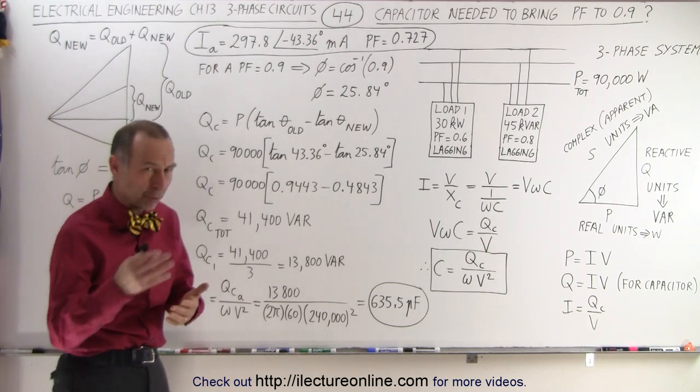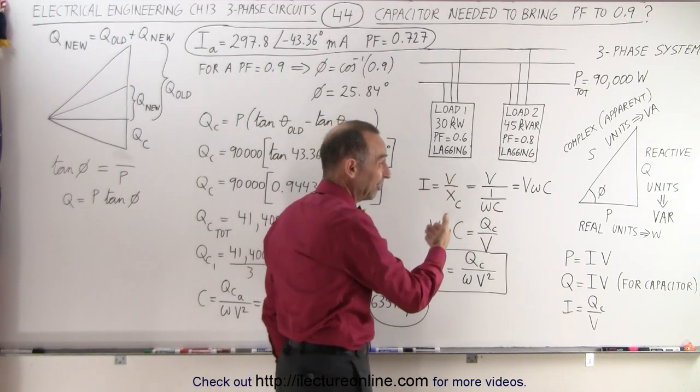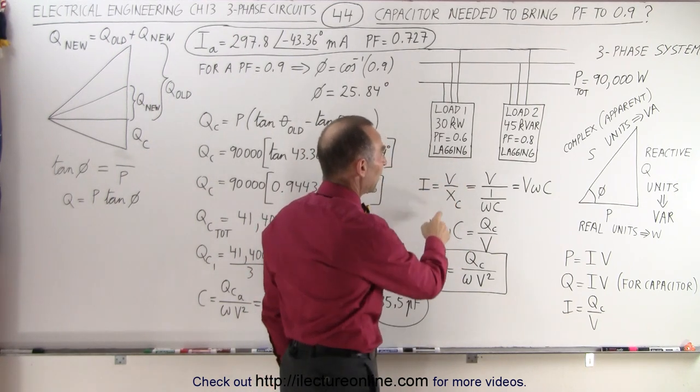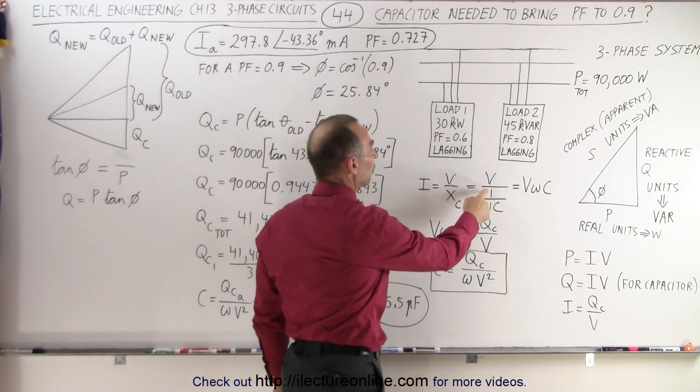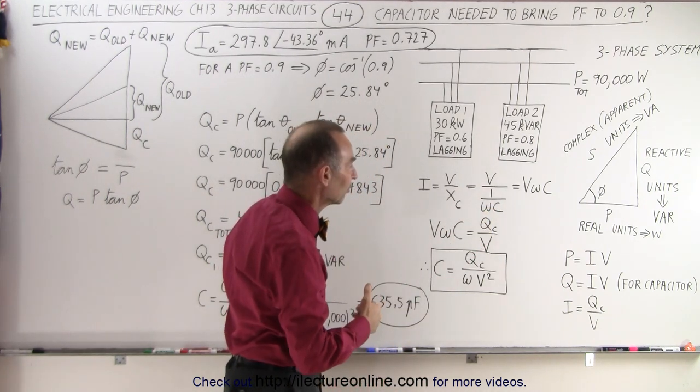So going back to some old equations, we need to remember that the current is equal to the voltage divided by the resistance, and in this case, it's the voltage divided by the reactance of the capacitor, which can be written as 1 over omega C, where omega is equal to the radial frequency of the oscillations.